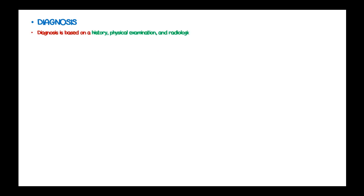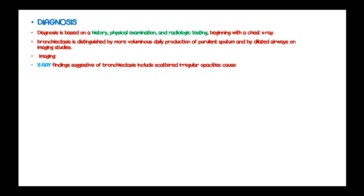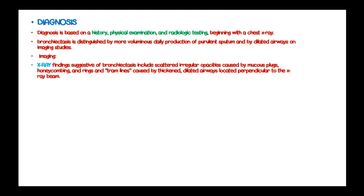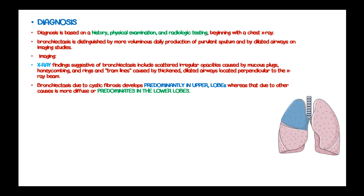Diagnosis of bronchiectasis is based on history, physical examination, and radiologic testing, beginning with a chest X-ray. Bronchiectasis is distinguished by more voluminous daily production of purulent sputum and dilated airways on imaging. X-ray findings suggestive of bronchiectasis include scattered reticulonodular opacities caused by mucous plugs, honeycombing, and rings caused by thickened dilated airways perpendicular to the X-ray beam. Bronchiectasis due to cystic fibrosis develops predominantly in upper lobes, whereas other causes tend to predominate in the lower lobes.